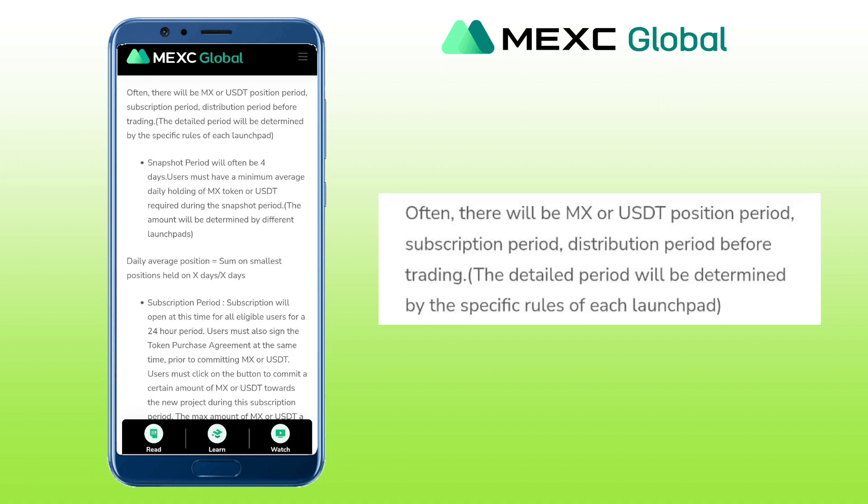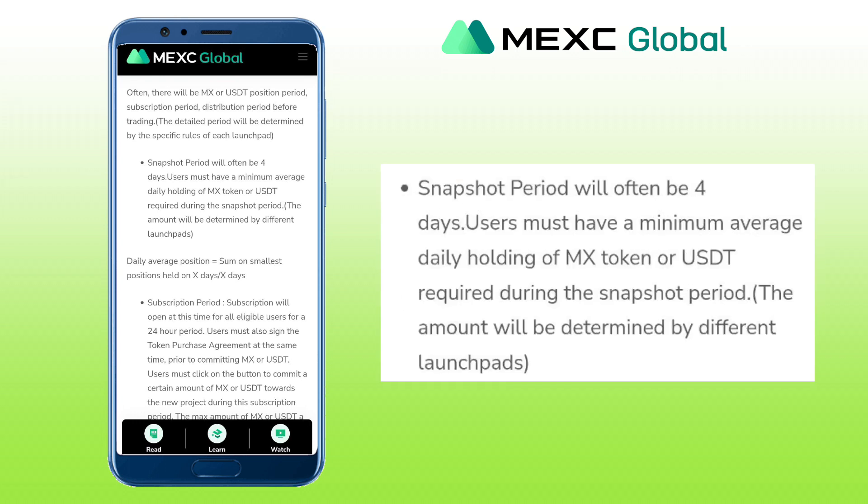Often, there will be an MX or USDT position period, subscription period, and distribution period before trading. The detailed period will be determined by the specific rules of each Launchpad. A snapshot period will often be four days. Users must have a minimum average daily holdings of MX tokens or USDT required during the snapshot period. The amount will be determined by different Launchpads.